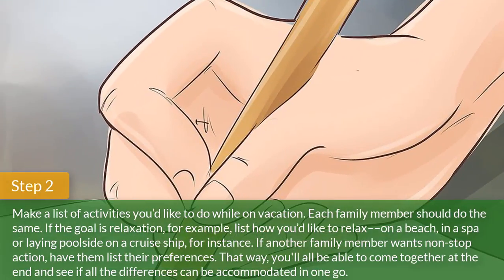Step 2. Make a list of activities you'd like to do while on vacation. Each family member should do the same. If the goal is relaxation, for example, list how you'd like to relax on a beach, in a spa, or laying poolside on a cruise ship. If another family member wants non-stop action, have them list their preferences. That way, you'll all be able to come together at the end and see if all the differences can be accommodated in one go.